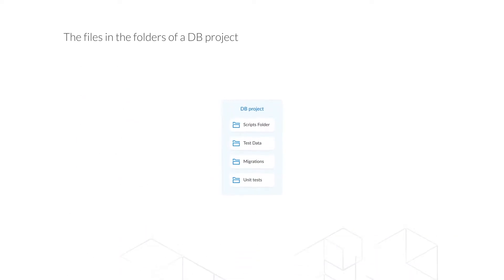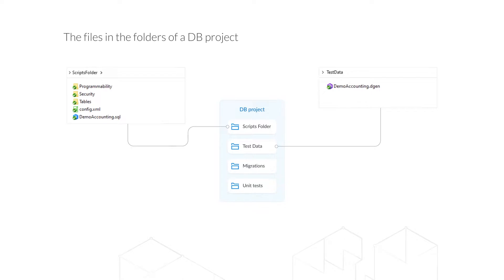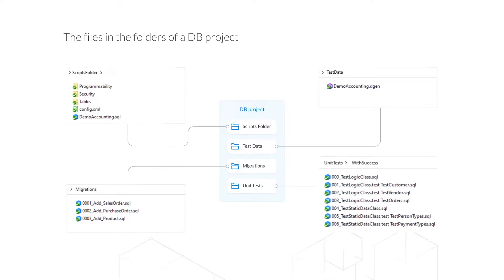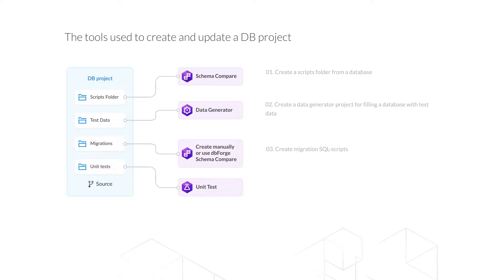Let us consider in more detail the contents of each project folder. The scripts folder contains state-based scripts and supporting files created by dbForge Schema Compare. The test data folder holds the project file used to populate the tables and views with realistic data — there might be any number of those files depending on the needs. The migrations folder contains migration scripts that update the database. In the unit test folder, there are SQL scripts of the unit tests that are added to a database before running unit testing. The scripts folder can be filled using the dbForge Schema Compare tool, the test data folder is populated using dbForge Data Generator, the migrations folder can be filled with dbForge Schema Compare or created manually, and the unit test folder is filled with dbForge Unit Test.